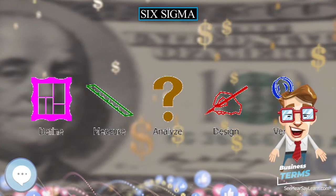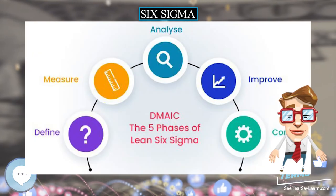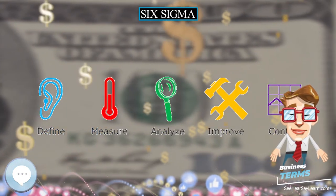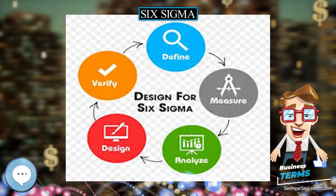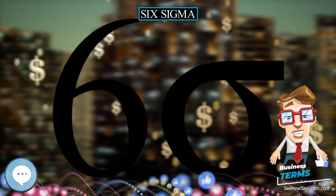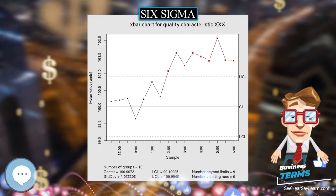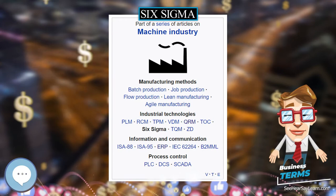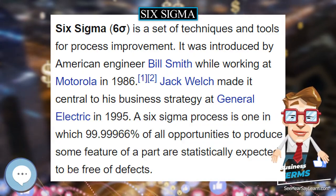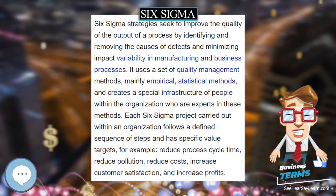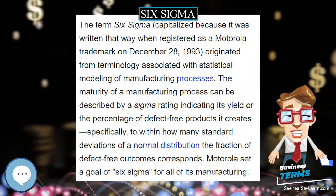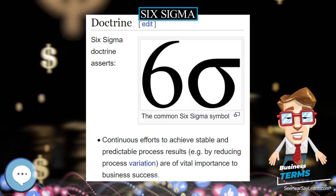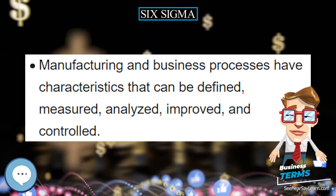The table below gives long-term DPMO values corresponding to various short-term Sigma levels. These figures assume that the process mean will shift by 1.5 Sigma toward the side with the critical specification limit — in other words, the long-term CPK value will be 0.5 less than the short-term CPK value. For example, the DPMO figure for 1 Sigma assumes the long-term process mean will be 0.5 Sigma beyond the specification limit (CPK = −0.17), rather than 1 Sigma within it (CPK = 0.33). Note that defect percentages indicate only defects exceeding the specification limit nearest the process mean; defects beyond the far specification limit are not included.